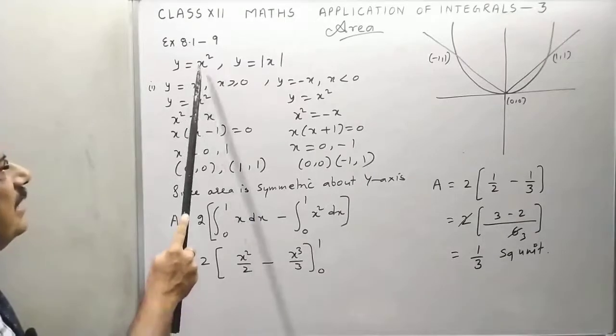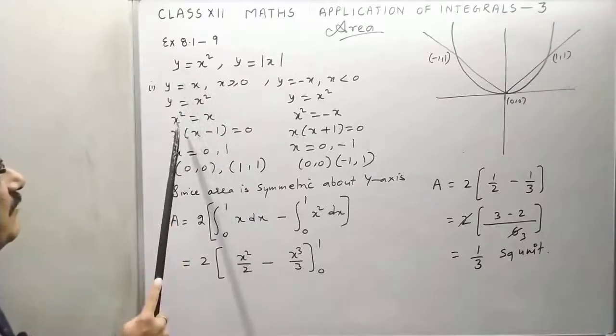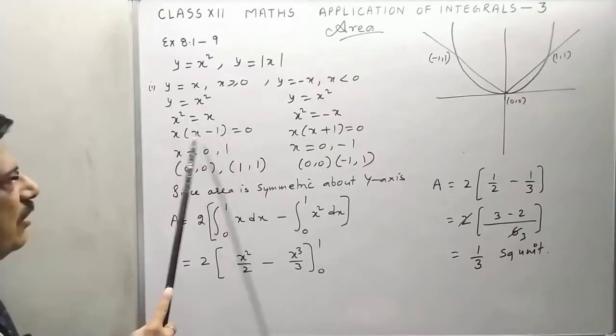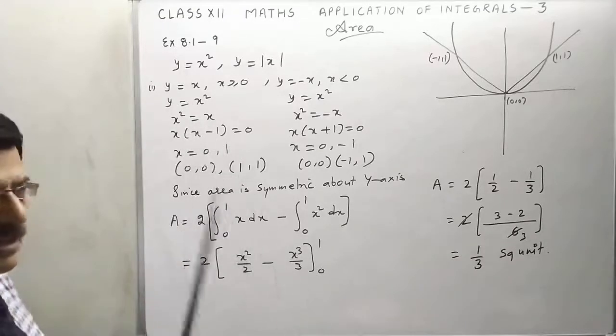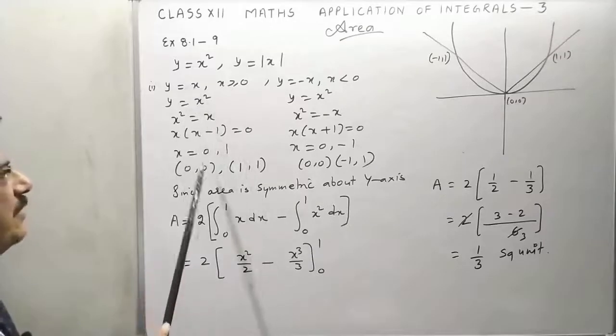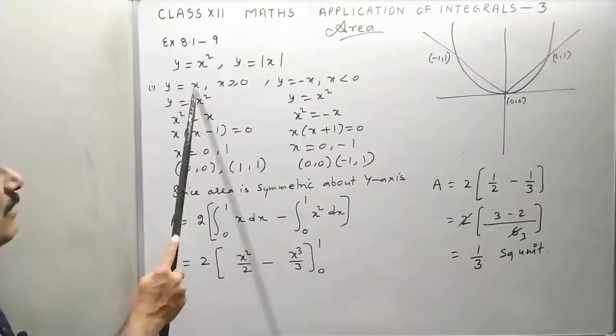Replace y by x. We get x square is equal to x. Take common, we get 0 and 1. When x is equal to 0, y will be 0. When x is 1, y will be 1.